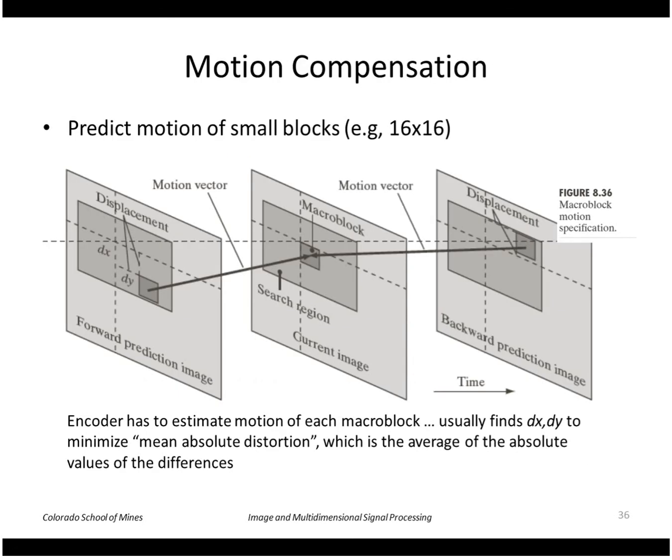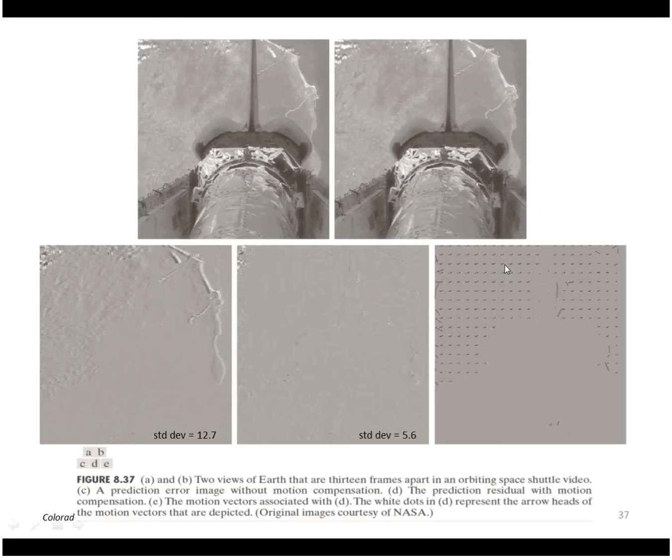To improve the predictive coder we can estimate the motion based on some previous data. So for example we look at a little patch and we look how it's moved over time. And we can say okay in the next image it's going to move to here if it keeps on moving at that rate. So then the prediction will be the value here based on where it was over here. And this does improve the predictive coder.